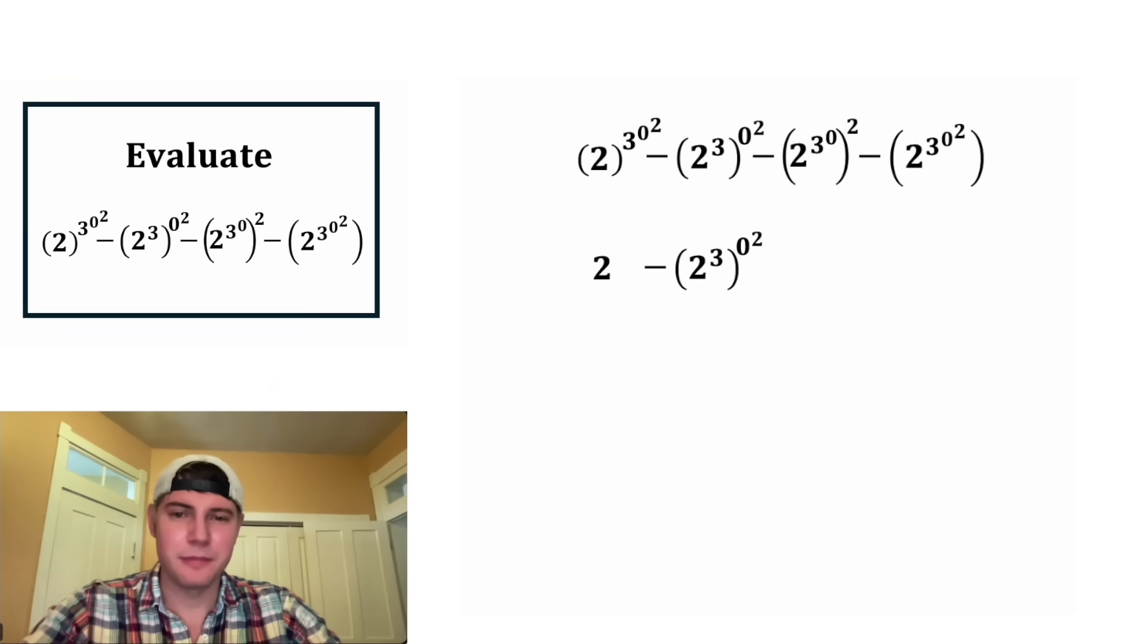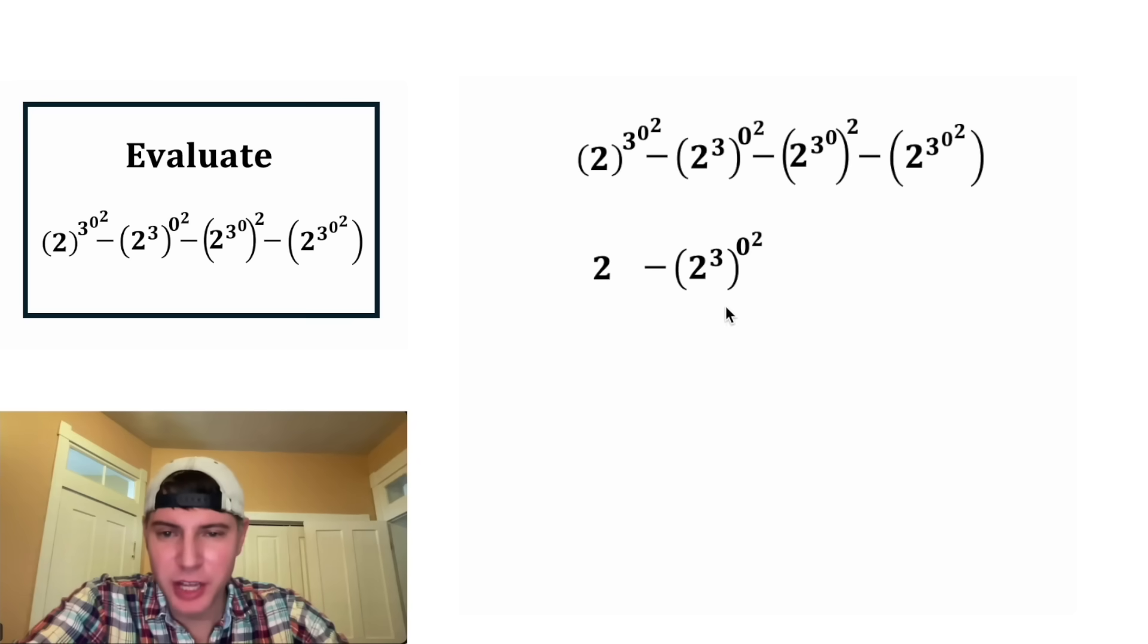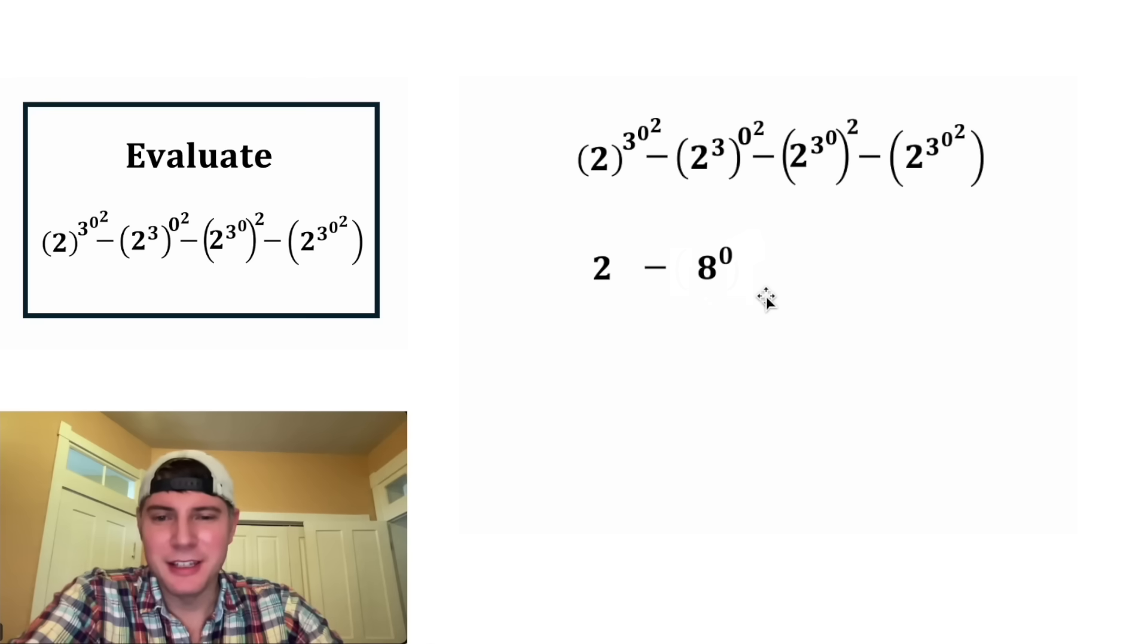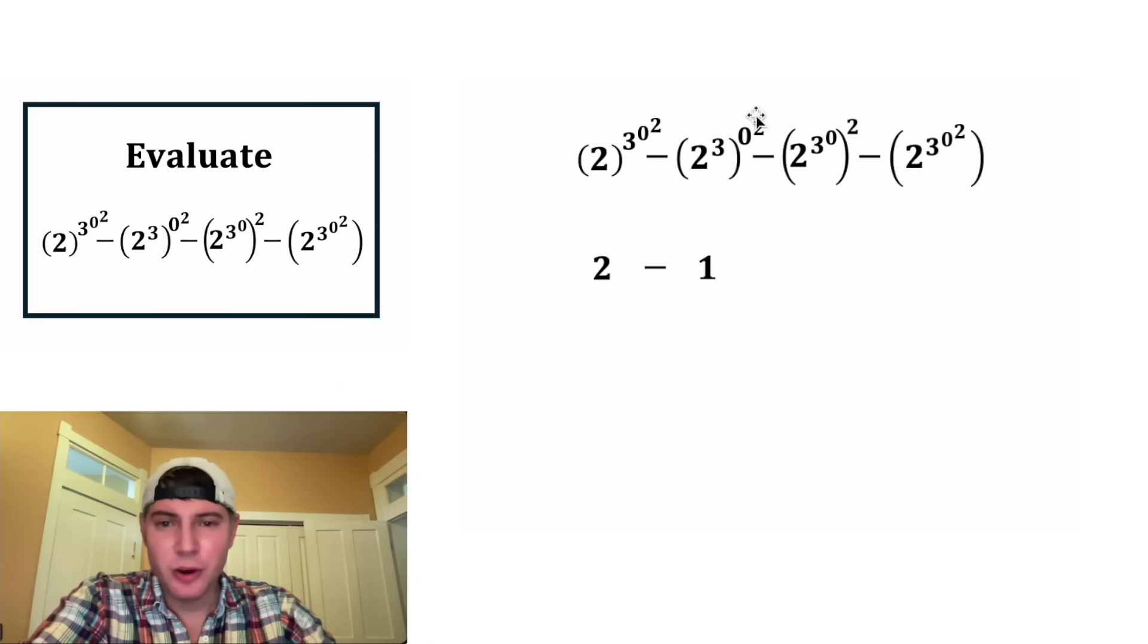Now let's focus on the second term. The major difference here is the location of the parentheses. We need to evaluate inside the parentheses first. Two cubed is equal to eight. Now we can focus on the tower. Zero squared is equal to zero, and now we can do eight to the zero. Anything to the power of zero is one, so this whole second term simplified to one.